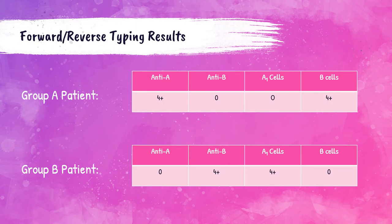The forward and reverse grouping tests are performed together to make up the ABO testing. This is a test constantly performed in the blood bank, and you should know the procedure and be able to perform it with 100% accuracy. It's also critical to know what the expected forward and reverse grouping results should look like for each of the ABO blood groups.